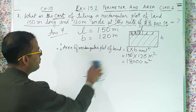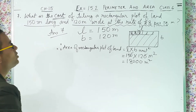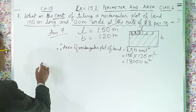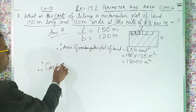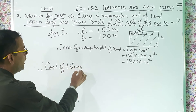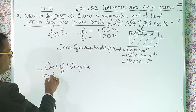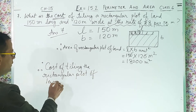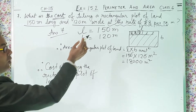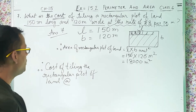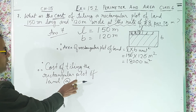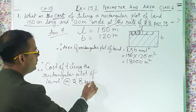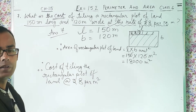Now we have to find out the cost of tiling. So cost of tiling the rectangular plot of land at the rate of rupees 8 per square meter. The rate symbol is written as 'at' with a circle. Rupees 8 per meter square means 8 rupees for every meter square.